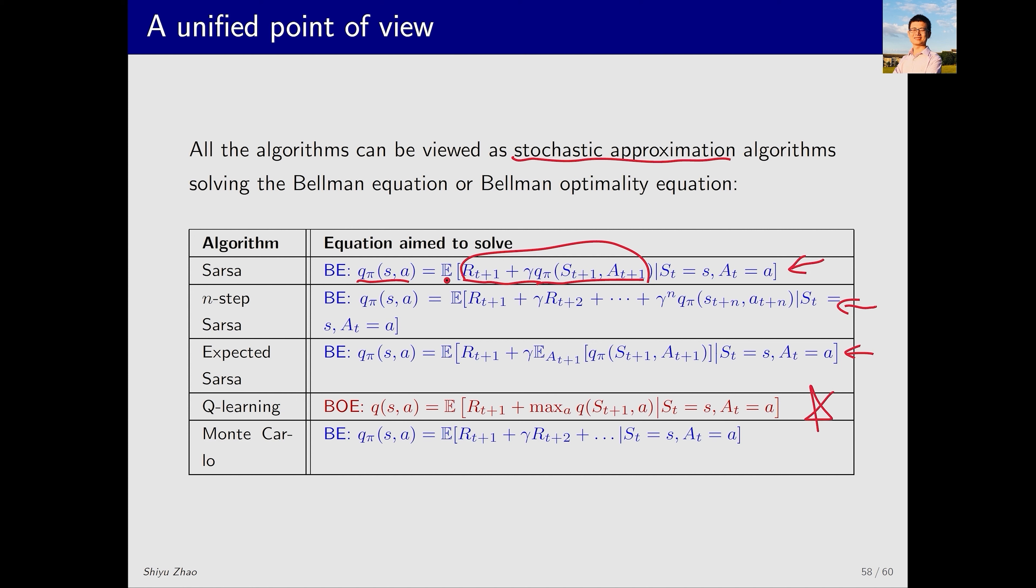One point that needs to be emphasized is that Q-learning is not solving a Bellman equation, but a Bellman optimality equation. So, it directly solves for the optimal Q value. Consequently, the resulting policy is also optimal.